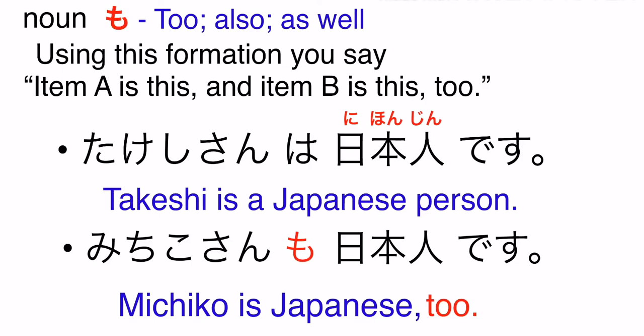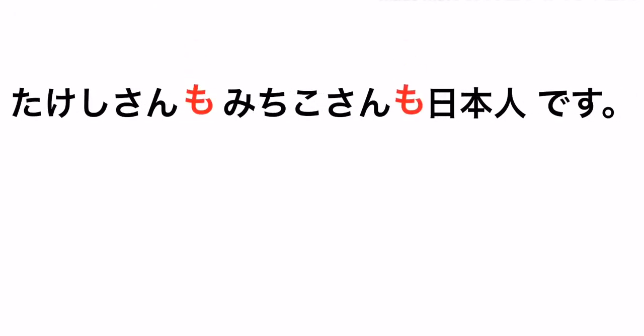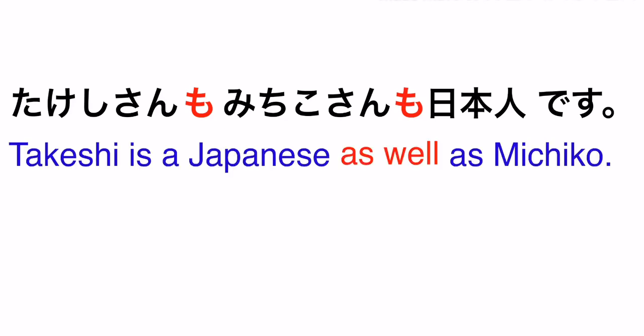Din yung noun natin dito is si Michiko-san. So palaging tandaan na si mo is palaging andun after noun. So si mo, pwede din natin gamitin sa ganitong formation. Takeshi-san mo, Michiko-san mo nihonjin desu. Takeshi is Japanese as well as Michiko. So pinag-isa lang natin yung dalawang sentence. Dito naging dalawa si mo at naging dalawa din si noun.